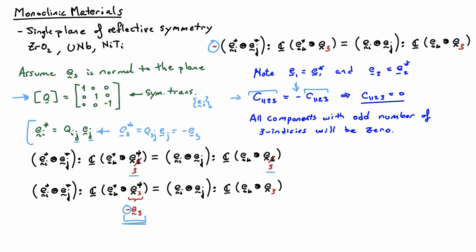In fact, all components that have an odd number of the three index appearing will be zero. Every time I use a three index, I'm going to pull out a minus sign. If I have two threes, the minus signs will cancel, but if I have one three or three threes, I'll have a minus sign and the number must equal its opposite, so it has to be zero.